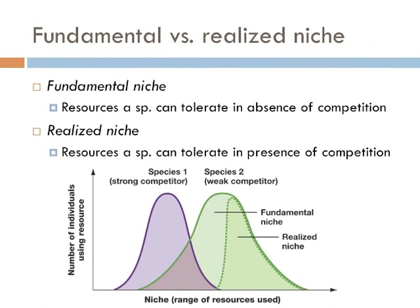The resources a species can tolerate is known as its fundamental niche. For example, a plant can live within a specific range of water availability. If the environment is too dry, the plant will shrivel and die. But if the environment is too wet, the plant roots cannot receive enough carbon dioxide to go through cellular respiration, and the plant dies.